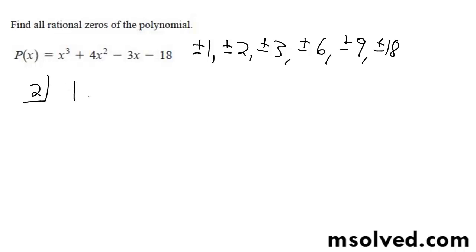So my constants are 1 for the x cubed term, 4, negative 3, negative 18. Bring this down, so I get 1, I get 2, I get 6, I get 12, I get 9, 2 times 9 is 18, I get 0. So there you go.